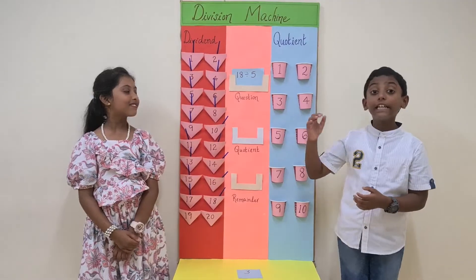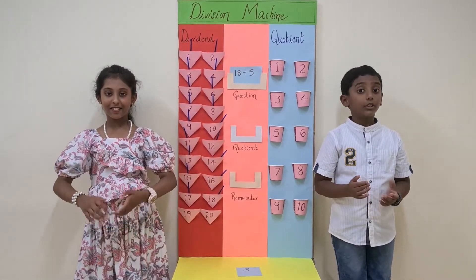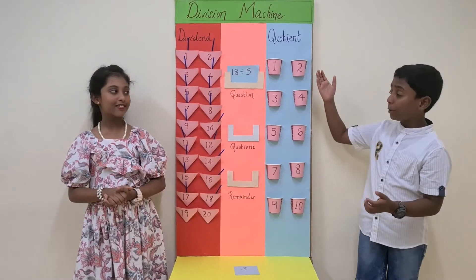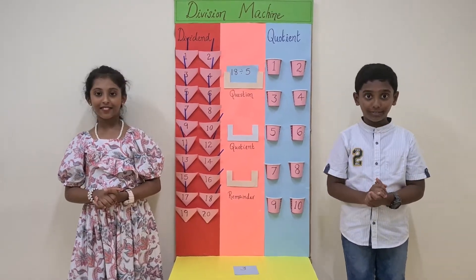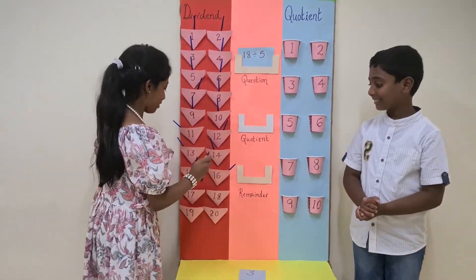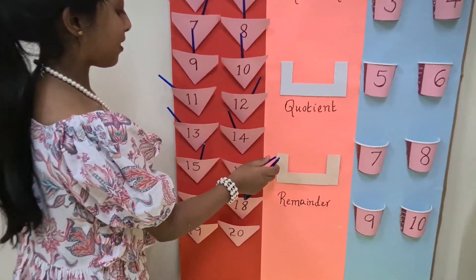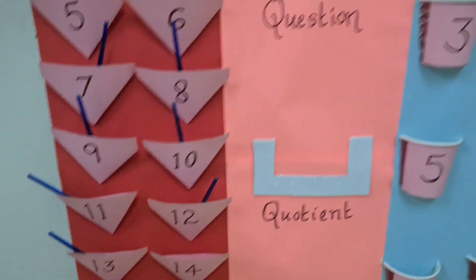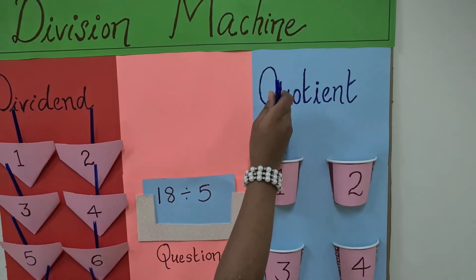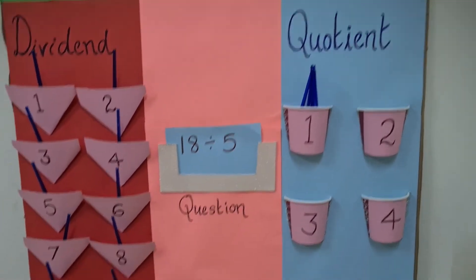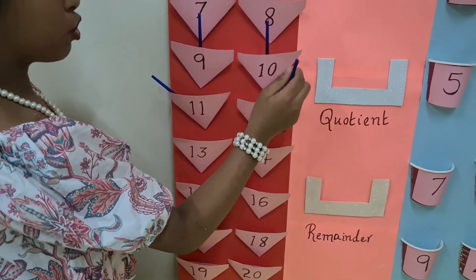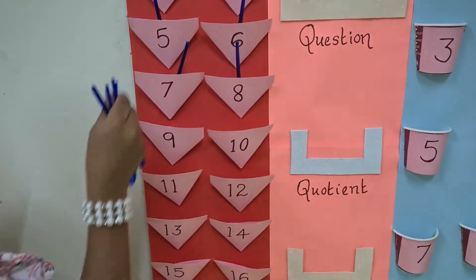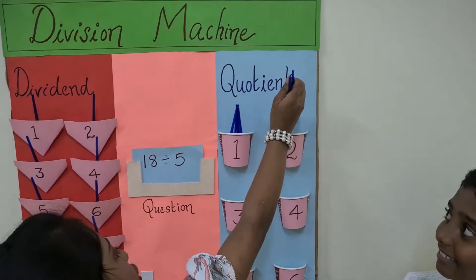Here 5 is the divisor, so we will take a group of 5 spoons and put it in the quotient pouch. 1, 2, 3, 4, 5. First group. 1, 2, 3, 4, 5. Now we have the 2nd group.